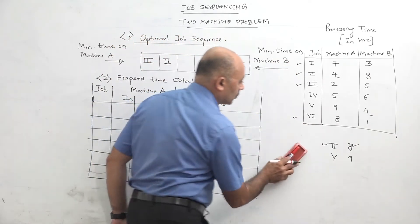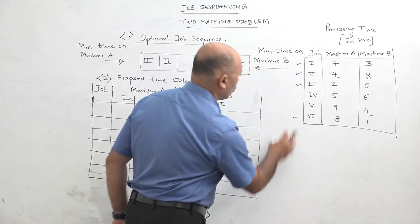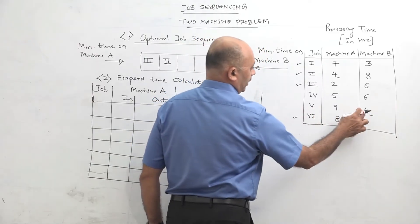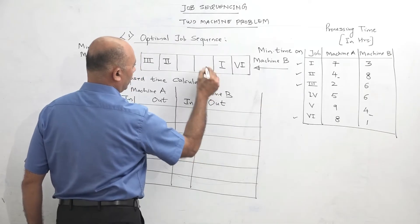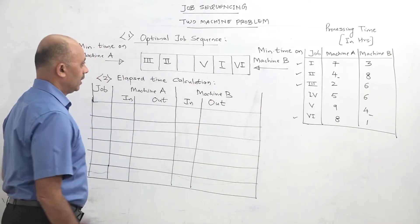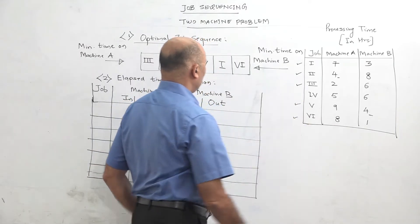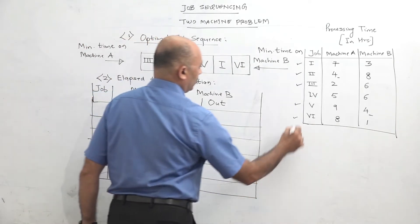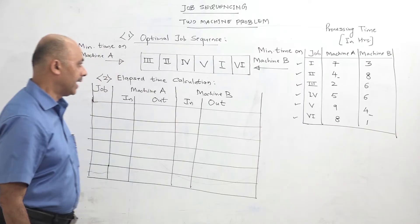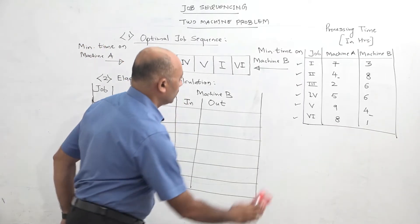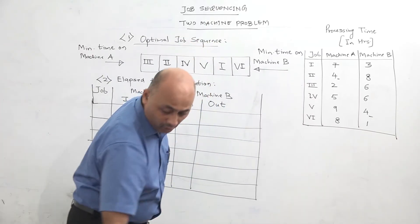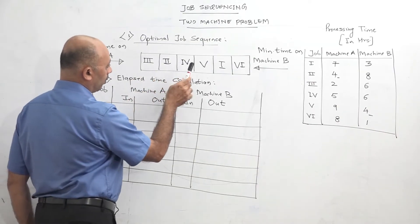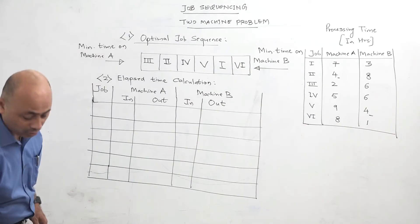Two jobs remain: 4 and 5. Values are 5, 6, 9, 4. Minimum value is 4, job number 5. It is on machine B, so it will be from the right hand side. Write job number 5 from the right hand side. Now only one box is remaining, that is job number 4. Write here job 4. All allocations are complete. The optimal sequence is: 3, 2, 4, 5, 1, 6. This will be the order of processing the jobs.